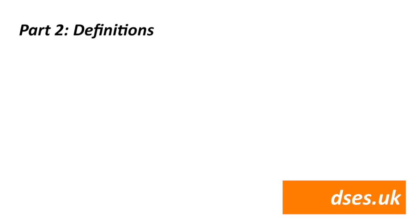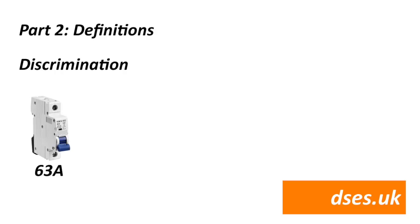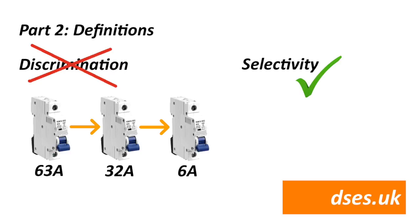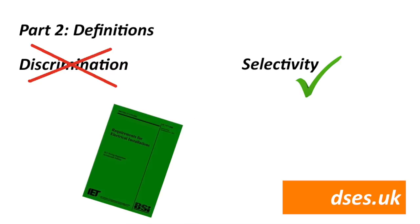We start at Part 2, where there are various changes in the definitions. One of the more obvious is the term 'discrimination' — which basically meant that further downstream on a circuit, the lower the value of the localised protective devices. That term has been replaced by the more positive-sounding 'selectivity'. To be fair, selectivity has been in the definitions list for some time — certainly in the green book of 17th edition incorporating Amendment 1 from 2011 — but previously it simply referred you back to discrimination. Now discrimination is gone entirely, its definition encompassed under selectivity.